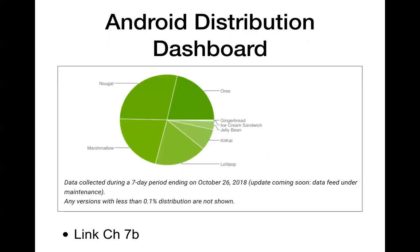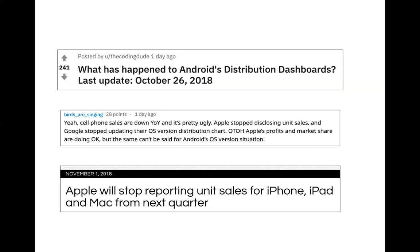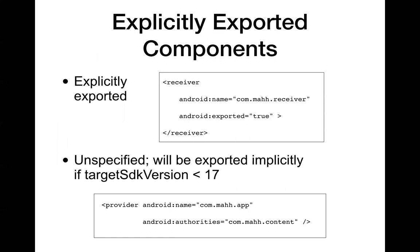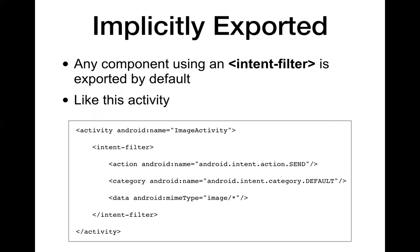Google stopped updating the Android version distribution chart because they were being humiliated by the fragmentation. And in case you think Google is just evil, Apple did the same thing — Apple quit reporting iPhone sales when they stopped being great. In the Android manifest file, you specify a receiver and make exported equals true, so that broadcast receiver listens to signals from other apps. An intent filter means you're listening for a certain kind of signal — for example, type equals image/star means it'll handle images.